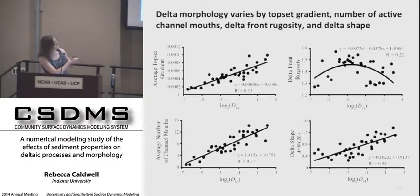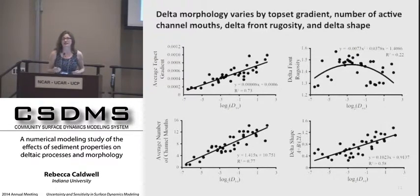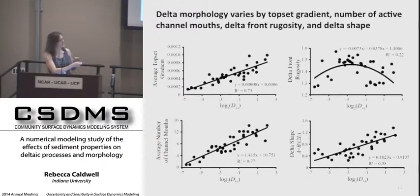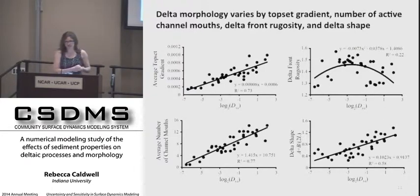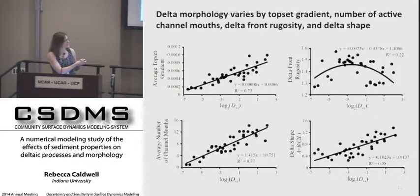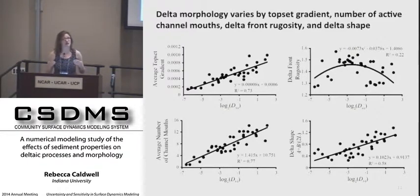As grain size increases, both the average top-set gradient and the average number of channel mouths increase, showing that the coarsest grain deltas have the steepest top-set gradients and the largest numbers of channel mouths. Delta-front rugosity has a somewhat parabolic relationship, showing that intermediate grain deltas create the most rugose delta fronts. Finally, the bulk delta-shape metric increases with increasing grain size, showing that coarse-grain deltas are semicircular and fine-grain deltas are elongate.